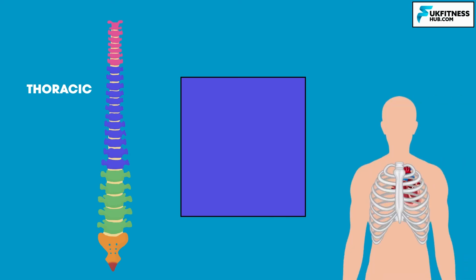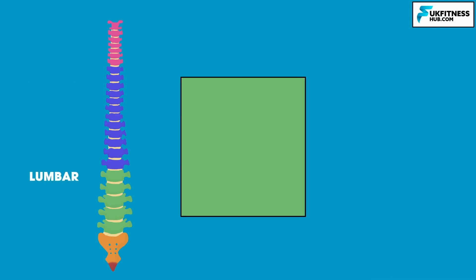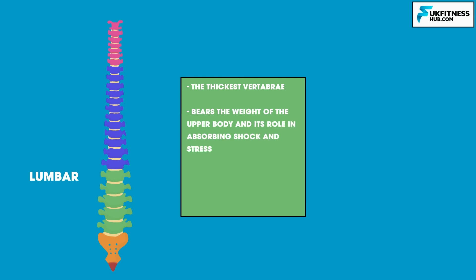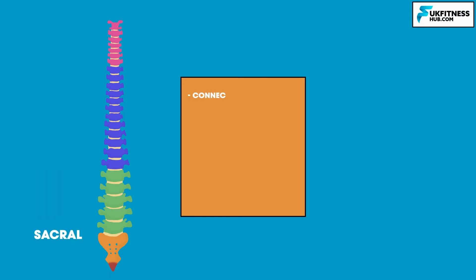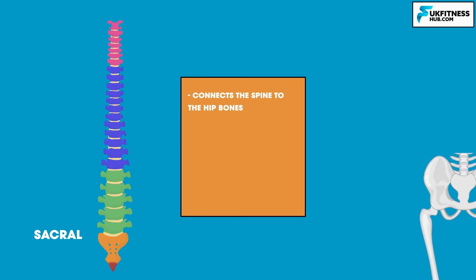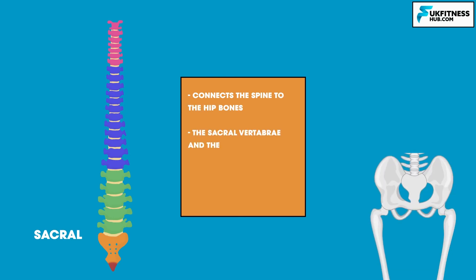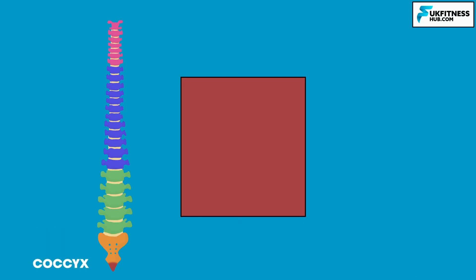The thoracic vertebrae of your mid and upper back have limited range of motion and hold the ribcage, helping to protect the heart and lungs. The lumbar vertebrae are the thickest, due to having to bear the weight of the upper body and their role in absorbing shock and stress. The role of the sacral vertebrae is to connect your spine to your hip bones. The sacral vertebrae and your pelvis are often referred to together as the pelvic girdle. Finally, the coccyx or tailbone is an important attachment point for ligaments and muscles of the pelvic floor.